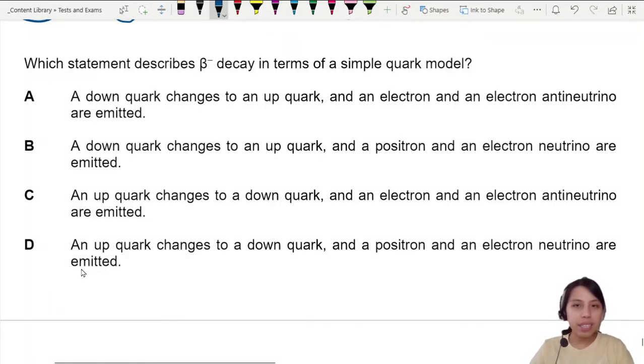Which statement describes beta decay in terms of a quark model? So what happens in beta decay? You need to know that in a nucleus, the proton number increased by 1. But why?